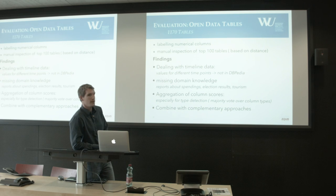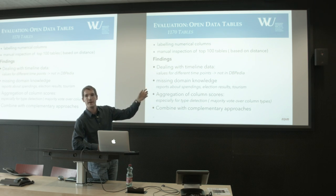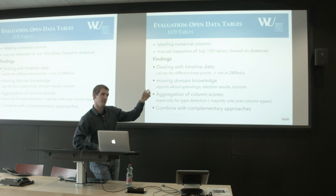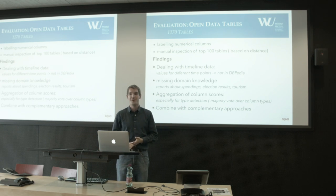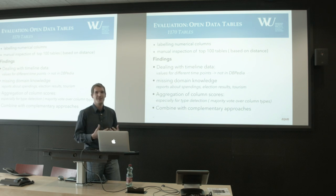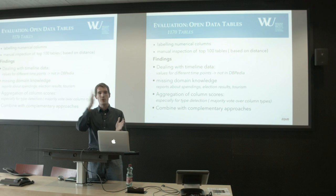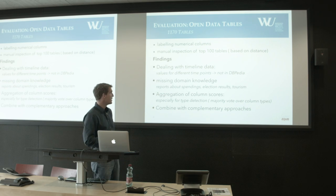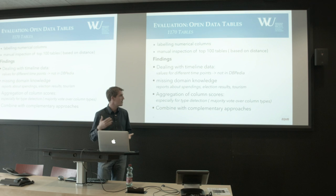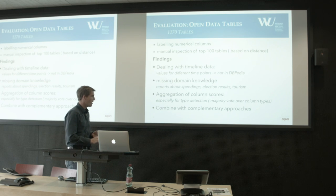We found a lot of CSV tables reporting demographics — like the number of BMWs sold in Vienna in 2014 or the number of Mercedes sold. Surprisingly, we labeled most of these values as population. That's wrong as a label, but when you look at it, it makes sense — it's a demographic count of, say, males between age 0 and 20 per district. But we missed a lot of domain knowledge: spending, election results, tourism.